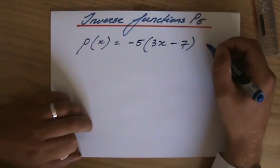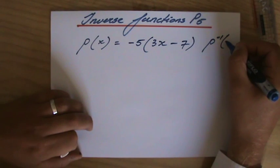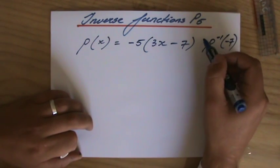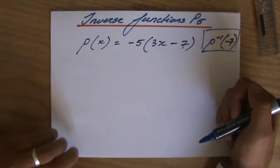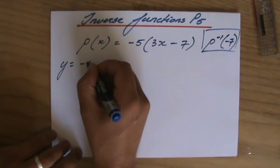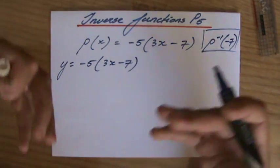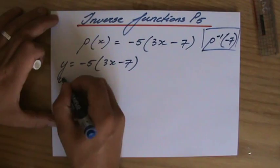We have to find the inverse function and then evaluate it for x = -7. So that is the question: find the inverse function of P and evaluate it for x = -7. So y equals -5(3x - 7). I've explained all of this already in previous videos.